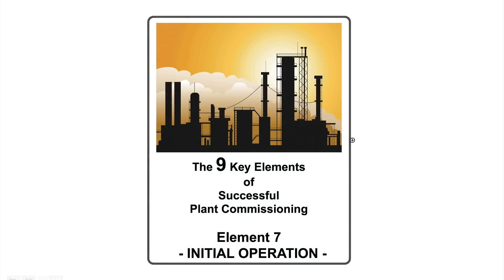So, let's start with key element number 7, initial operation. The 9 key elements of successful plant commissioning. Element 7, initial operation.